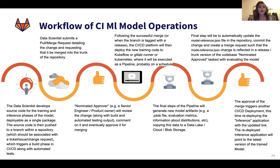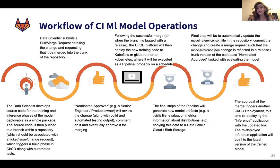The workflow of ML operations goes something like this: a data scientist develops source code for the training model as well as the inference phase, submits a merge request with the changes, and an approval can nominate it. After it's nominated, it triggers the CI/CD pipeline, where the new training code can be deployed — whether in GitLab Runner, your own environment, or Kubeflow, whatever it may be. The final steps of the pipeline generate new model artifacts, automatically updating different model references and JSON files. The approval of the merge triggers another deployment for redeploying the inference applications, and this whole infinite loop can be traced over time and goes on and on.